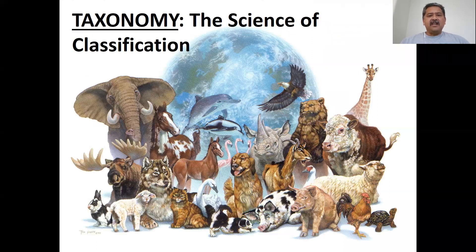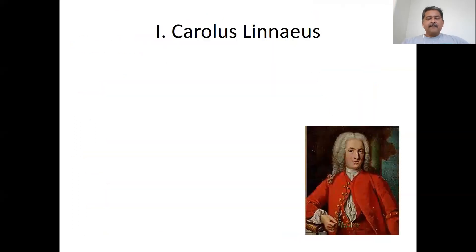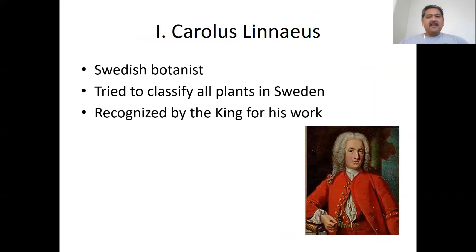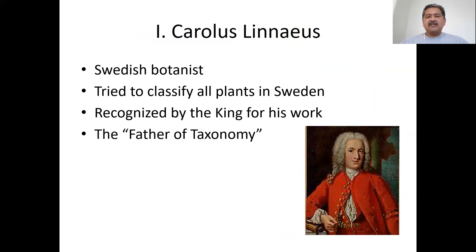Instead of studying each and every one of those 1.6 million different species of animals, we grouped them together so that we can be more efficient as we study. Taxonomy was first developed by a gentleman named Carl Linnaeus, Carolus Linnaeus. He was a Swedish botanist and his goal in life was to classify all the plants in Sweden. He did such a good job that he was recognized by the king of Sweden for his work.